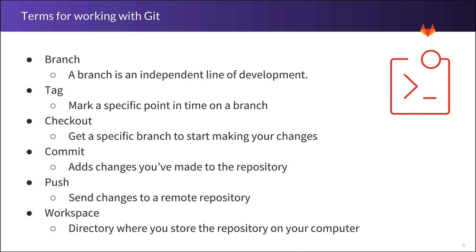You can then check out or revert to that point in time if you ever need to. The concept of checking out your code also exists within Git — it's where you get a local copy of the code at the branch you specify so that you can start making your desired changes. As you make changes to a branch, you'll commit those changes to record them into the repository.